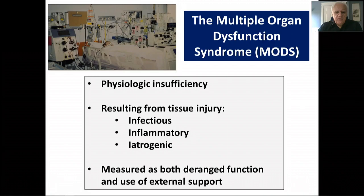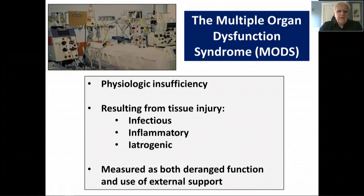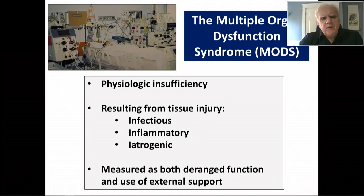What is the multiple organ dysfunction syndrome? Part of the challenge in trying to describe it accurately with biomarkers is that it's a very poorly characterized, though very dramatically expressed, clinical condition. In essence, it is physiologic insufficiency necessitating some form of exogenous support associated with acute critical illness. It can arise not only from infection — in which case we call it sepsis — but also through other inflammatory causes such as pancreatitis and multiple trauma, and it can arise as a result of iatrogenic injury in the process of supporting physiologic dysfunction.